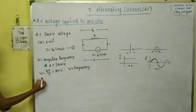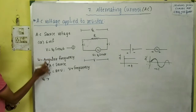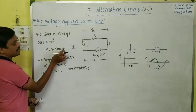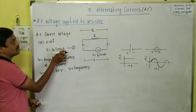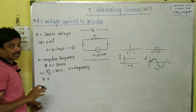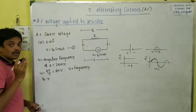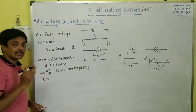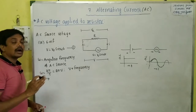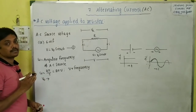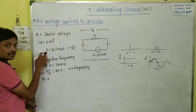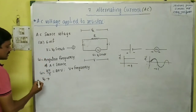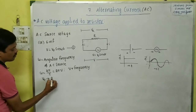In this voltage formula, voltage is a function of time — it varies with time. That is why it is called AC voltage. AC voltage means the voltage whose magnitude varies continuously and whose direction changes periodically. V₀ is the peak value of the voltage.